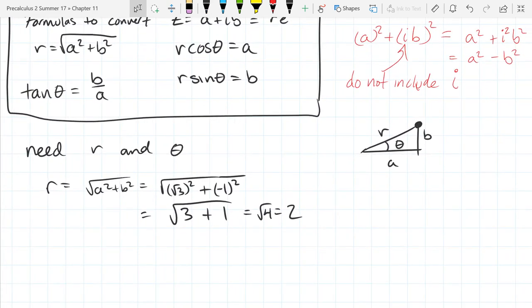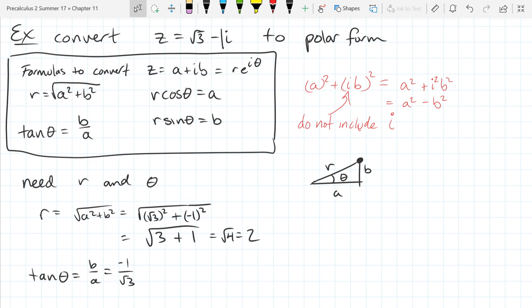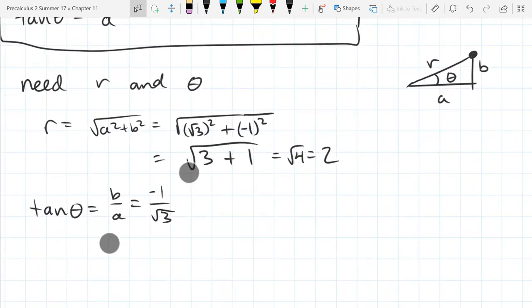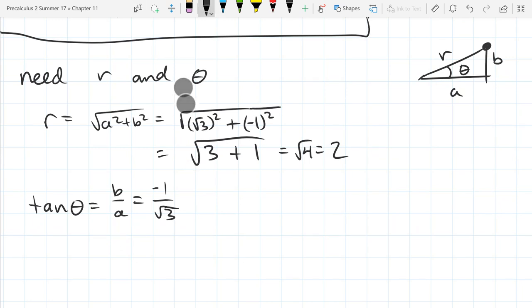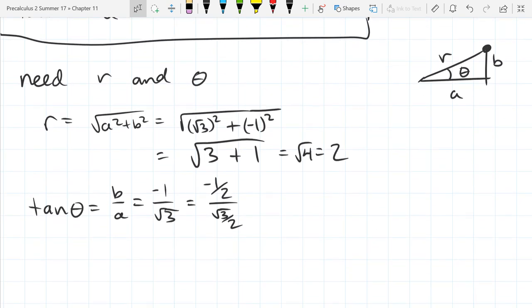Now we're ready for the angle theta. Tan theta is B over A which is negative 1 over square root 3. If you are not super familiar with all the tangent values, you do need to know the sine and cosine values for sure. I do know a sine or cosine value that includes square root 3 as square root 3 over 2. And of course this is not equal if I just leave it like this. So if I divide the denominator by 2, I divide the numerator by 2.